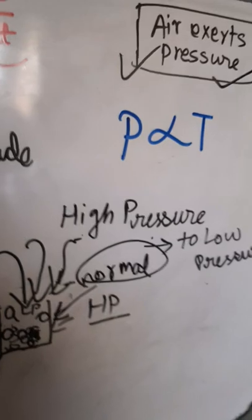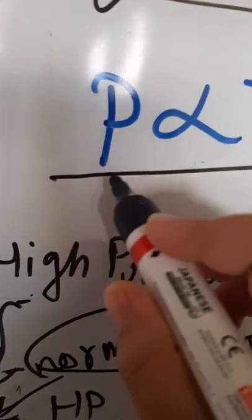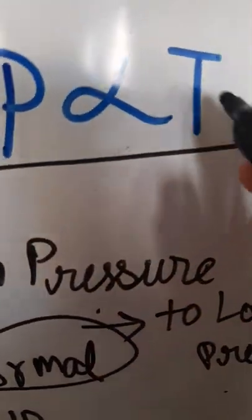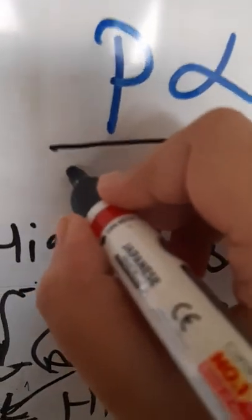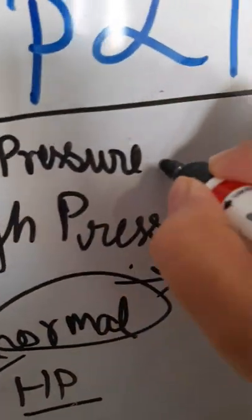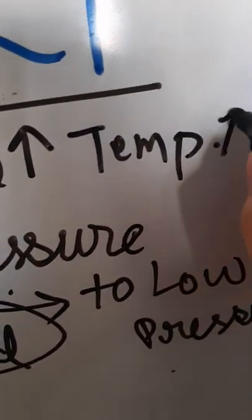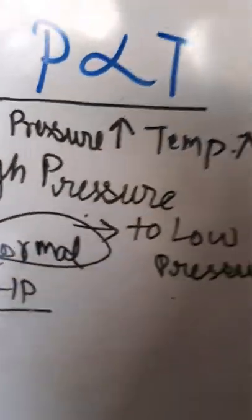So from this we can conclude that air exerts pressure and another formula: that pressure is inversely proportional to temperature. That means when pressure increases, it also increases the temperature. So pressure is increased, temperature is also increased.